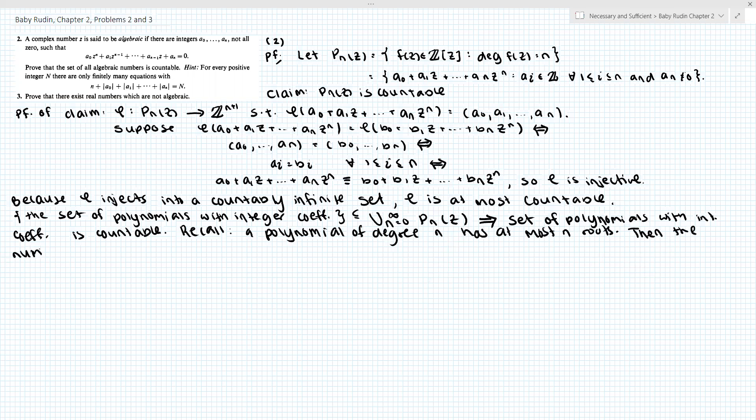Then the number of roots of any polynomial in P sub n of z is finite, which implies the number of roots of P sub n of z. So this implies that we can write the number of roots of all polynomials in P sub n of z as a countable union, countably infinite.